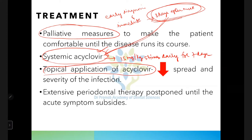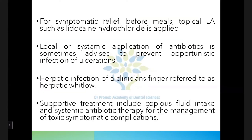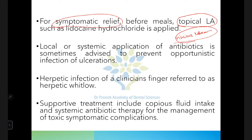Wait until acute symptoms subside before continuing any other periodontal therapy. Palliative treatment means giving relief to the patient — since the patient has pain from the ulcers, provide topical local anesthetic such as viscous lidocaine. The patient can use this drug before eating in order to aid proper nutrition.